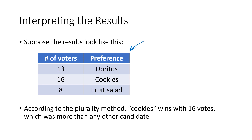In this kind of chart — and we're going to be seeing a lot of charts like this throughout this chapter — we have a column that gives the number of voters on the left, and what those voters' preferences are is listed to the right. So this means 13 people voted for Doritos, 16 people voted for cookies, and 8 people voted for fruit salad.